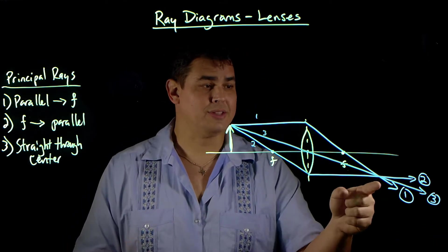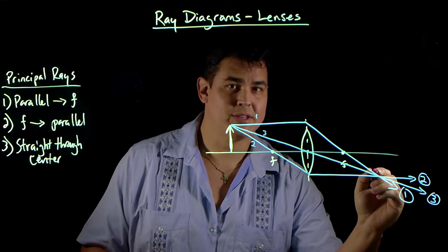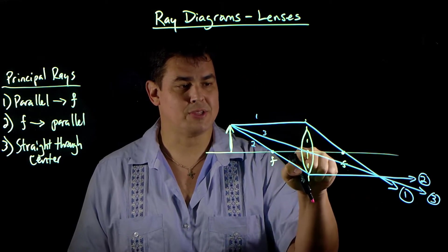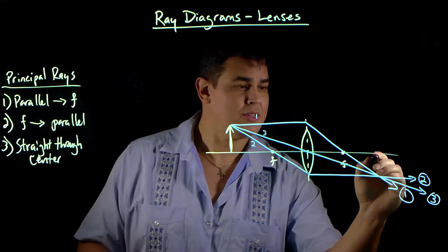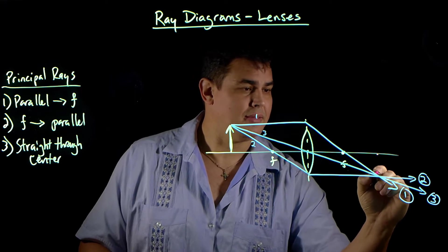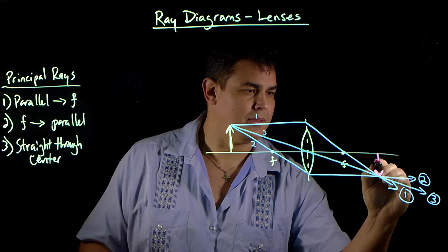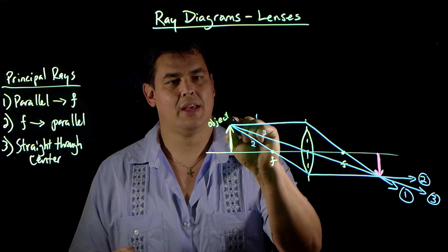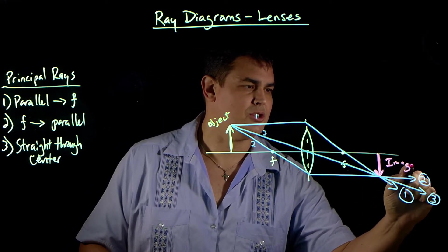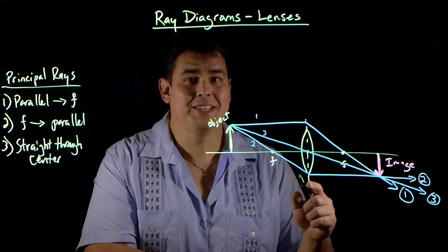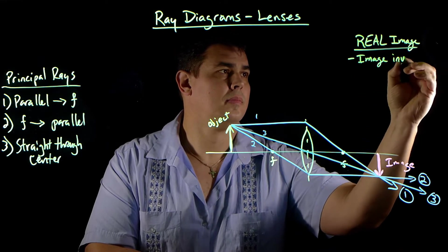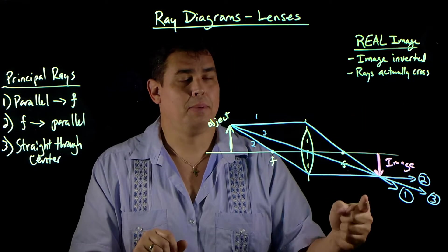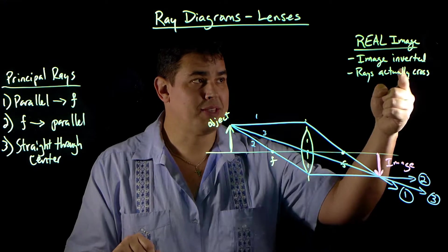There are my three rays, and you can see they meet over here. Where those rays meet, I draw the tip of my arrow. The base of the arrow stays on the line, but the tip is at that crossing point — connect the line and there is your image. This is called the object over here, and what you draw there is called the image. The image is flipped, so this is a real image. The easy way to tell: if an image is inverted, it's real.